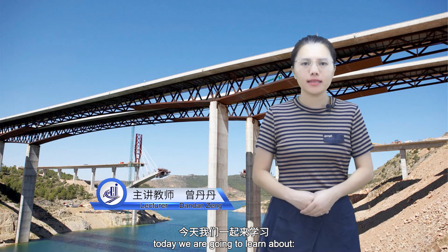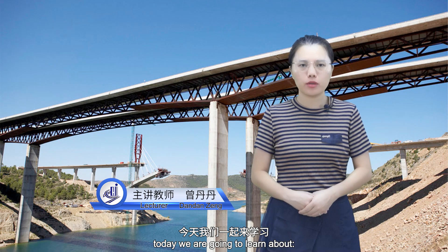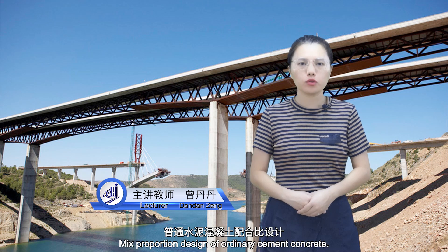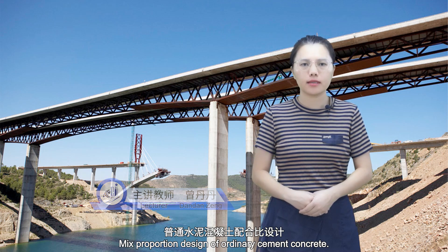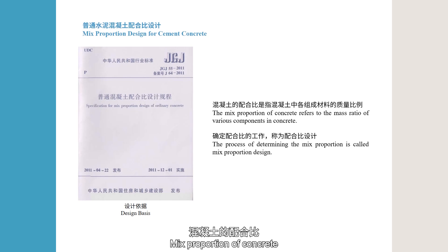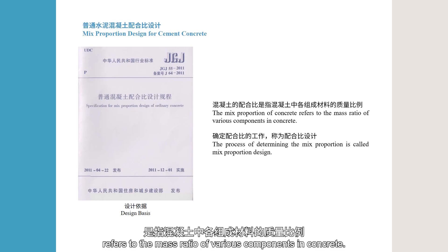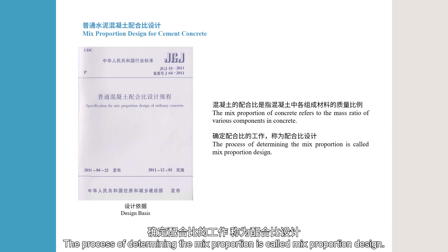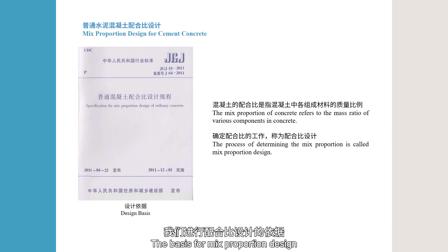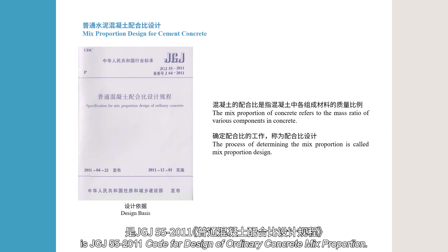Hello, classmates. Today, we are going to learn about Mixed Proportion Design of Ordinary Cement Concrete. Mixed Proportion of Concrete refers to the mass ratio of various components in concrete. The process of determining the mixed proportion is called Mixed Proportion Design. The basis for mixed proportion design is JGJ55-2011, Code for Design of Ordinary Concrete Mixed Proportion.